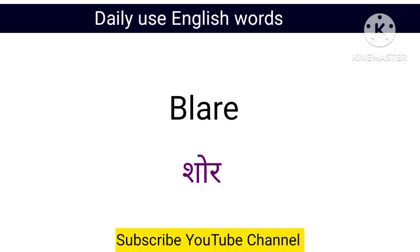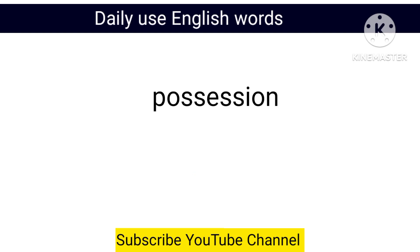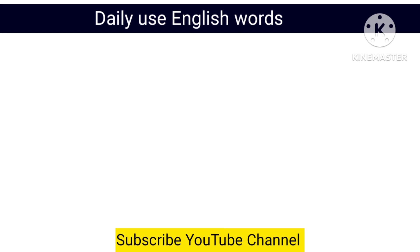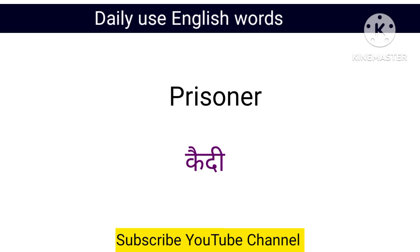Blair — shore. Cramp — ainten. Possession — kabja. Prison — karagar. Prisoner — kadi.